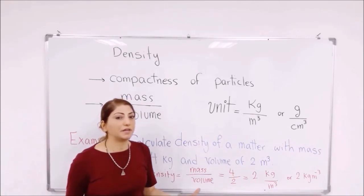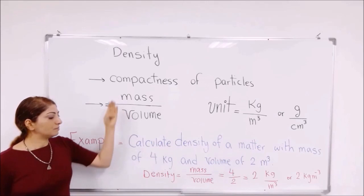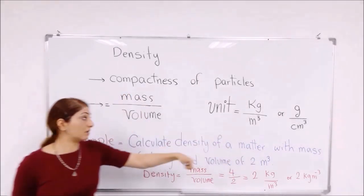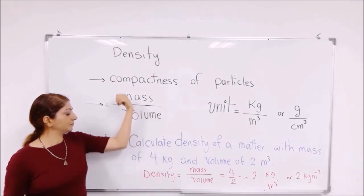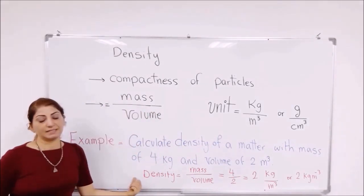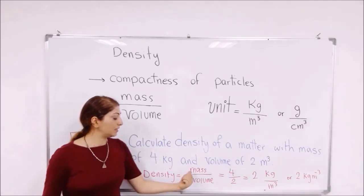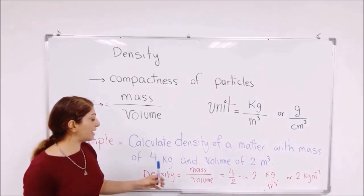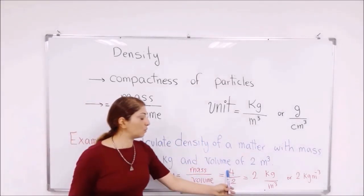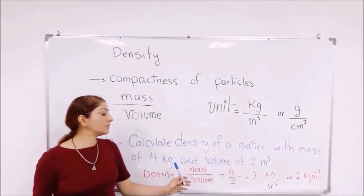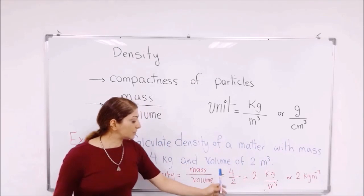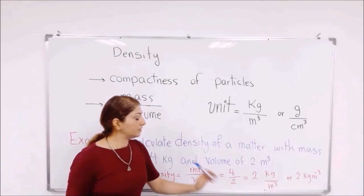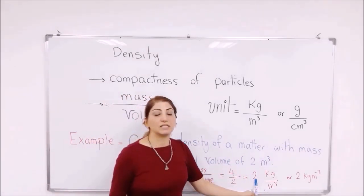How do you find the density? You just place the data given to you into the right formula. We know that density is equal to mass over volume. The mass here is 4 kg, so I place 4 here. And for the volume, I know that it is 2, so I place 2 here instead of volume. 4 divided by 2 — the answer is 2.